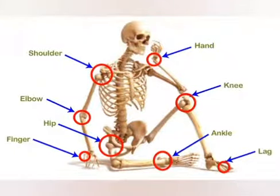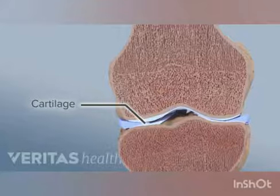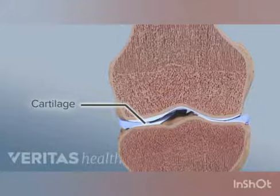In addition to bones, cartilage and muscles also help in movement. Cartilage holds the bones together at the joints and also protects the bones. Without cartilage, the bones would rub against each other and wear out. Some organs such as the nose and ears have cartilage too.